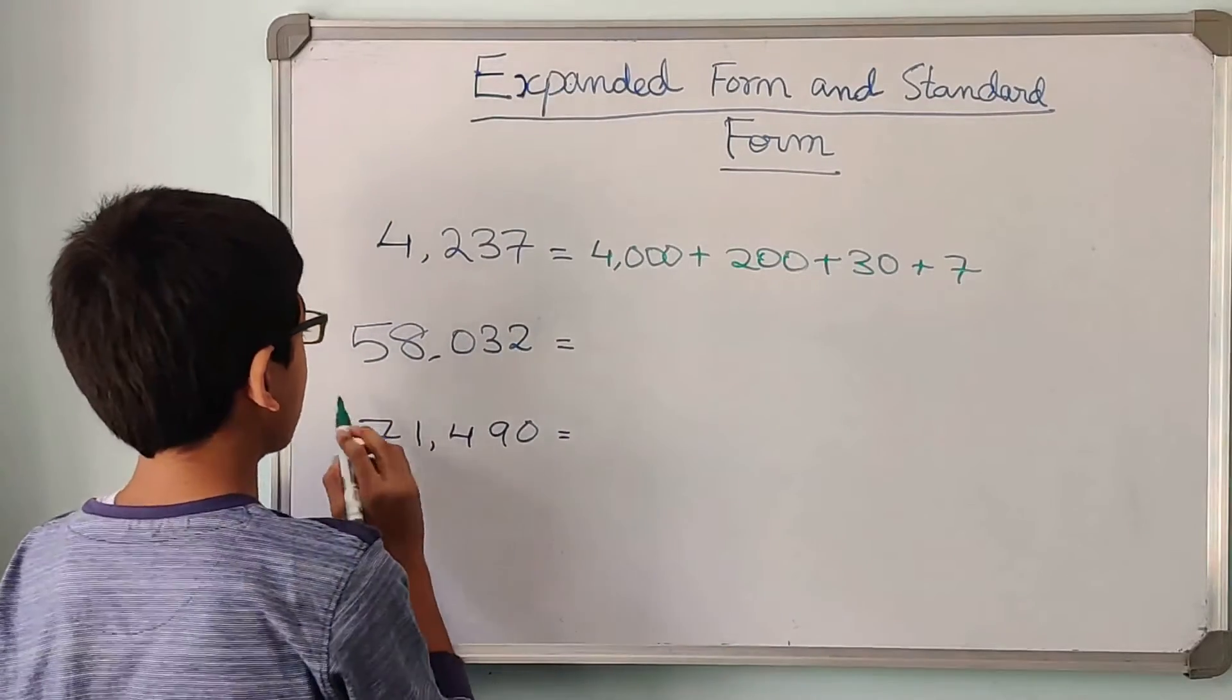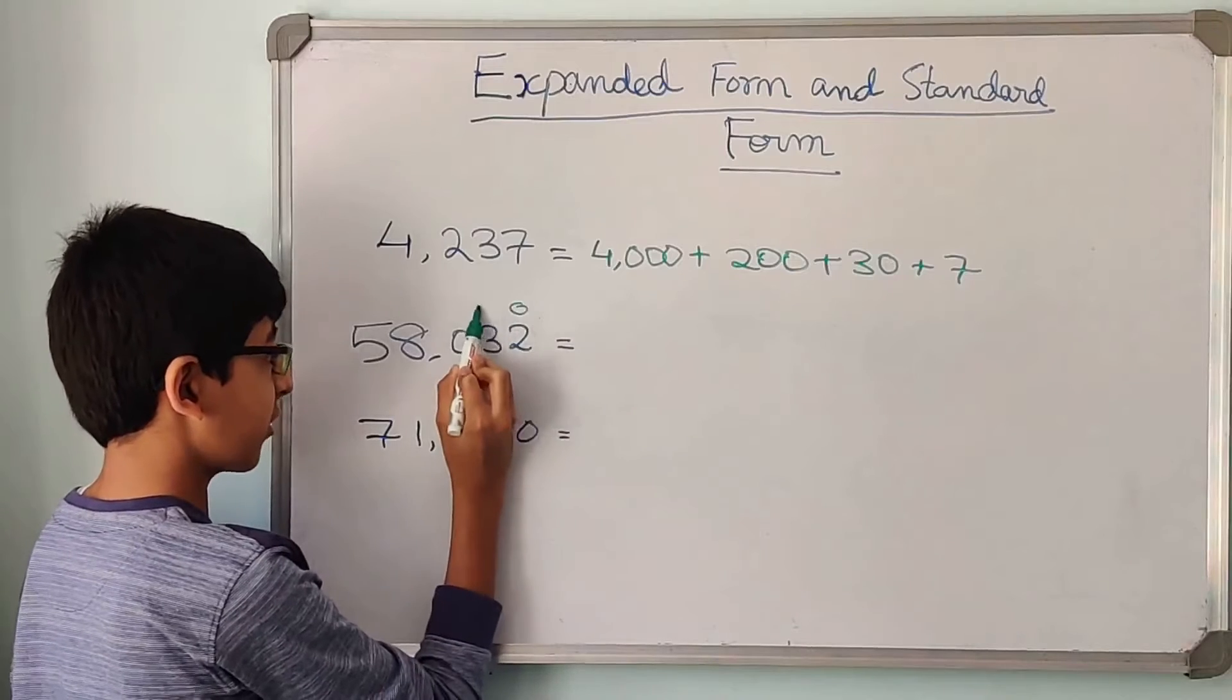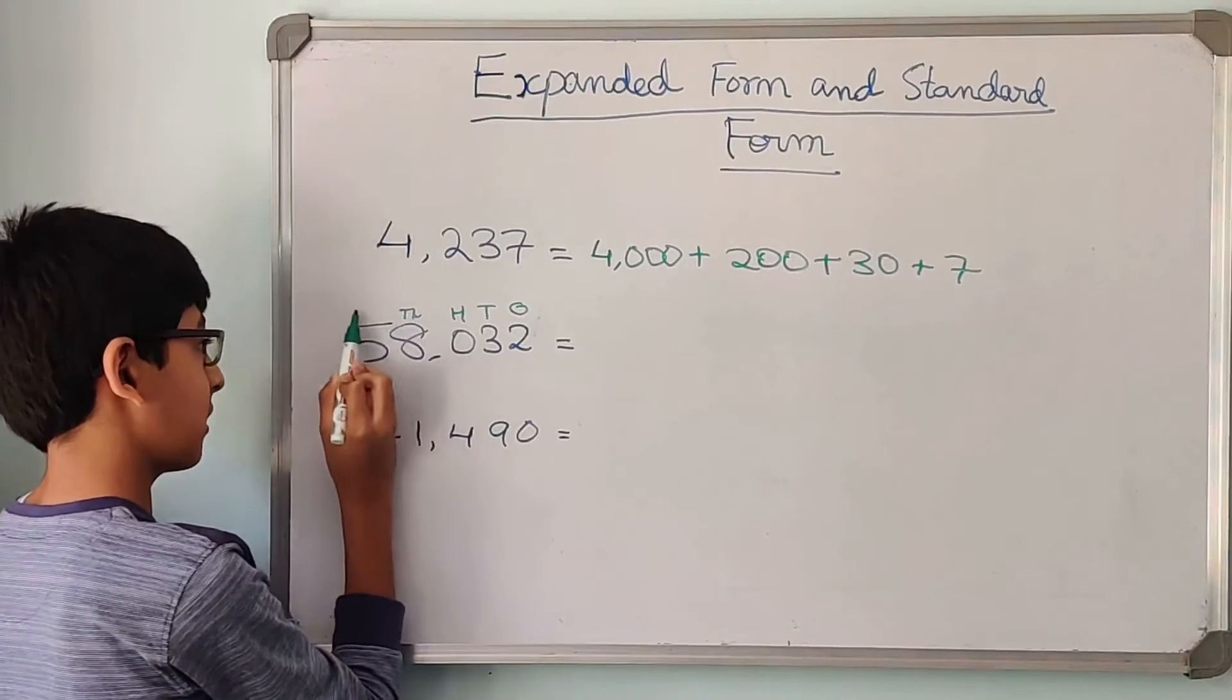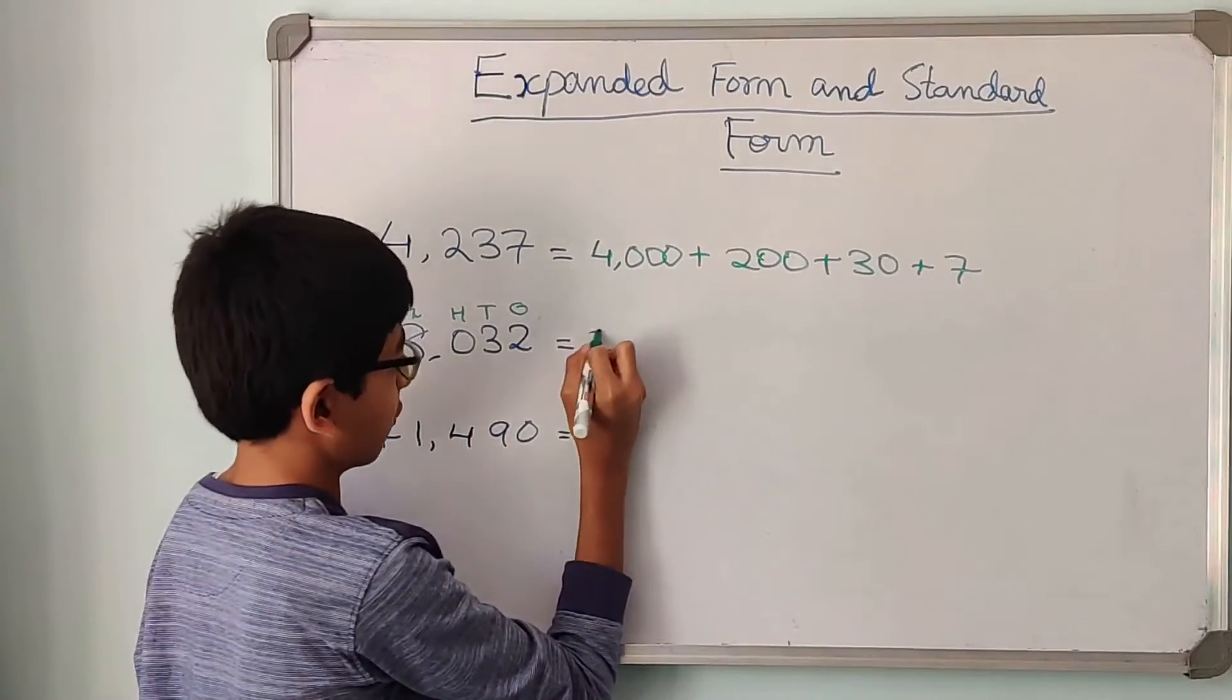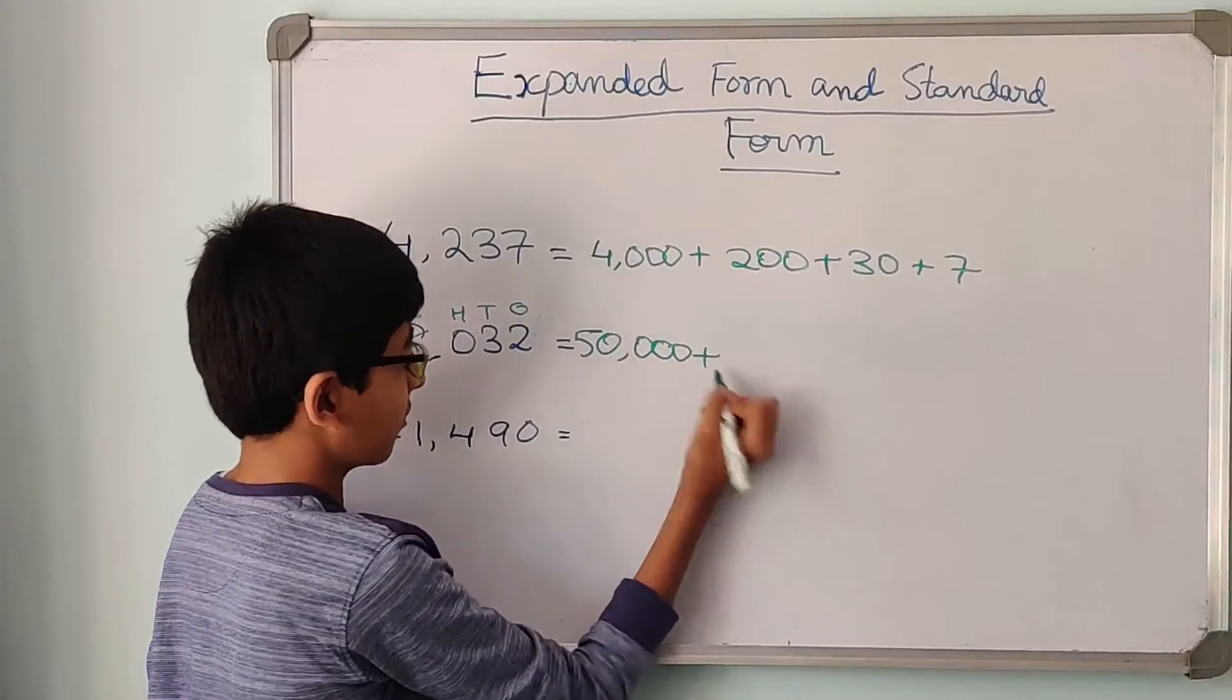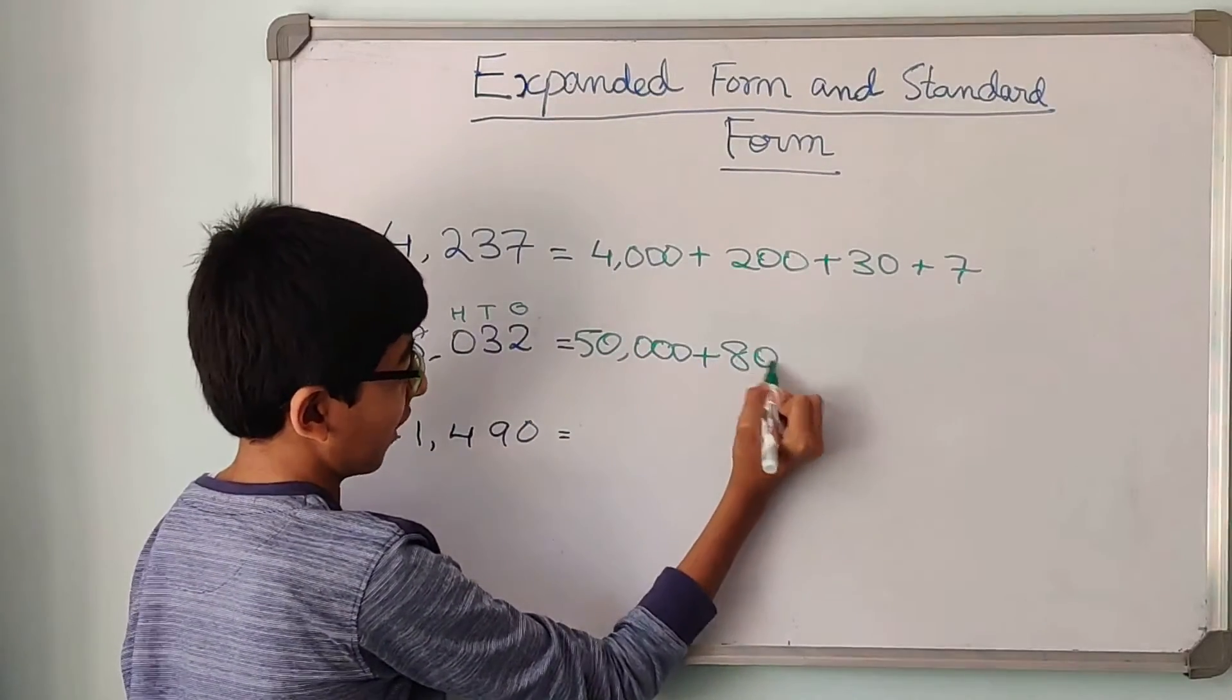Now we can move on to our second number, 58032. Let me just write the places. Ones, tens, hundreds, thousands, and 5 is in the ten thousands place. So now the place value of 5 is 50,000 as it is in the ten thousands place, plus 8,000 as 8 is in the thousands place.